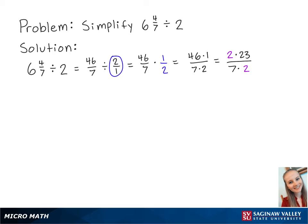Now that we have a 2 on the top and the bottom, these will cancel out, and we are left with 23 sevenths.